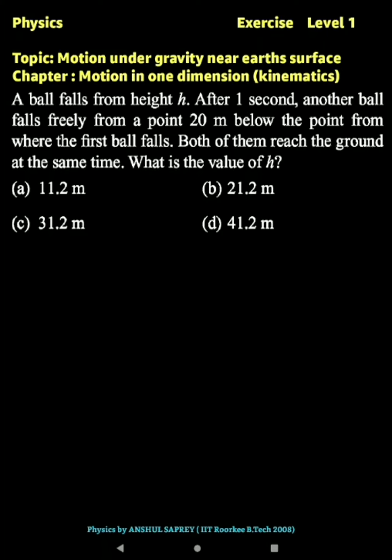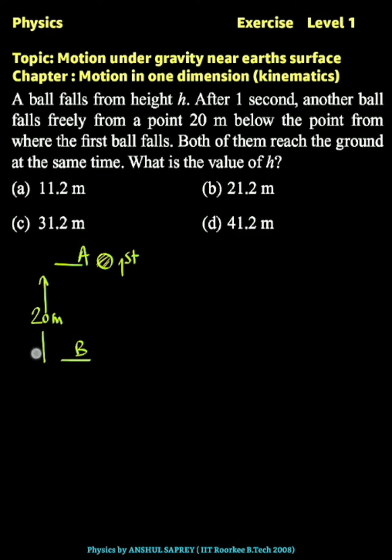A ball falls from height h. After one second, another ball falls freely from a point 20 meters below the point from where the first ball falls. So let this be point A from which the first ball is dropped, and this is point B from which the second ball is dropped, which is 20 meters below point A.